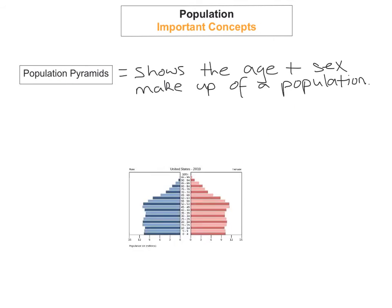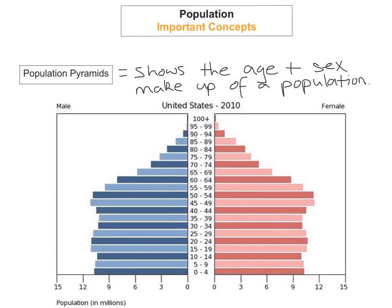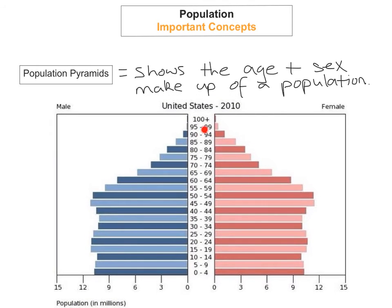I'm going to show you a population pyramid. This is what a population pyramid looks like. This is for the United States and it was taken in 2010. You've got male, which is the blue, and female, which is the pink. Along the middle, you've got the ages. That's 0 to 4 years old, 5 to 9 years old, 10 to 14 years old, 15 to 19 and so on, all the way up to 100 plus.